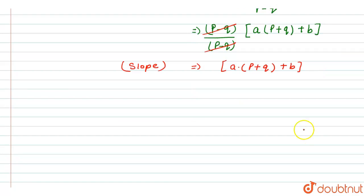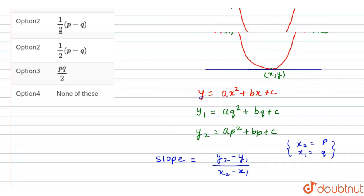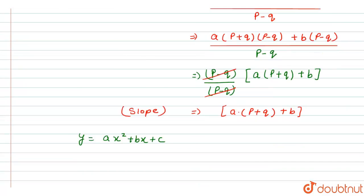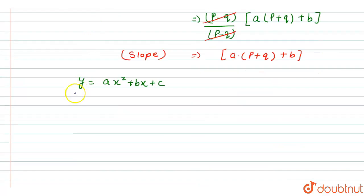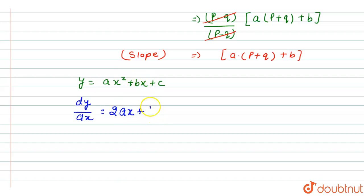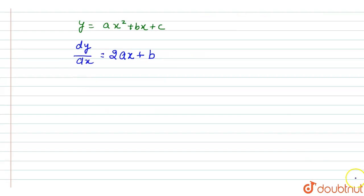Now we find the tangent slope from the curve equation y equals ax squared plus bx plus c. We differentiate: dy/dx equals 2ax plus b. The differentiation of x squared gives 2x, with constant a retained; differentiation of bx gives b; and the constant c differentiates to 0. So the slope of the tangent is 2ax plus b.